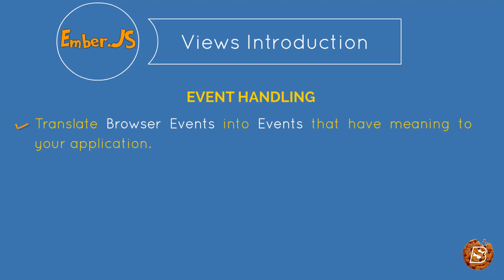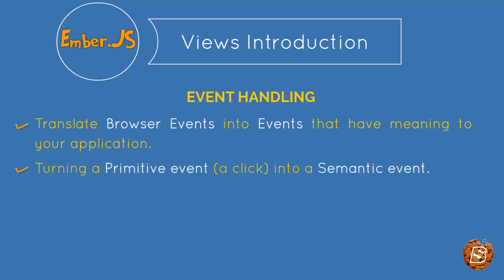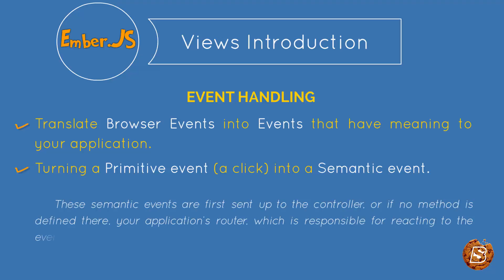The view is responsible for turning primitive events like click into a semantic event like post a review. These semantic events are first sent to the controller, or if no method is defined there, to your application's router, which is responsible for reacting to the event based on the current state of the application. So the flow goes from view to controller, and from controller to router.